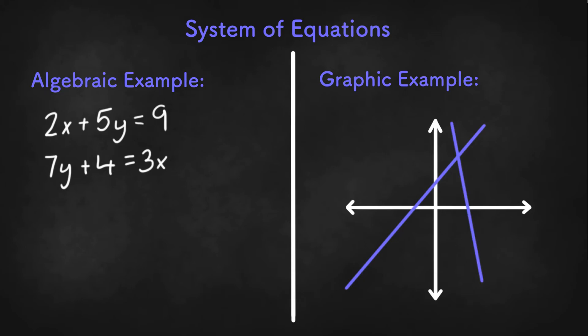A solution to a System of Equations would be the ordered pair that is true for all the equations. In this example, the solution would be (x, y).